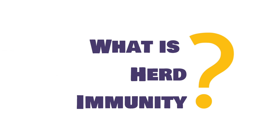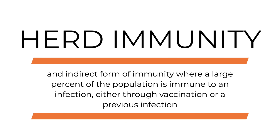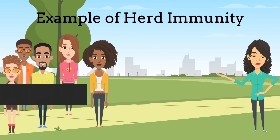Another term that has been on the news lately is herd immunity. Herd immunity is an indirect form of immunity where a large percent of the population is immune to an infection, either through vaccination or a previous infection. When a large amount of the population is immune to a disease, it decreases the risk for people not immune. To be clear, herd immunity only works for diseases spread through human contact.